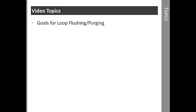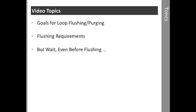Our topics include the goals for loop flushing and purging of the system, which includes the reasons for removing air and debris from the system. We'll also discuss flushing requirements for velocity through the system and flush cart equipment requirements. The topic 'but wait, even before flushing' addresses reducing headers and their importance in loop flushing and purging air from the system. Once you've reviewed this video on flushing and purging concepts, you'll find other videos on GeoFlow's YouTube channel on Flush Cart Operation.